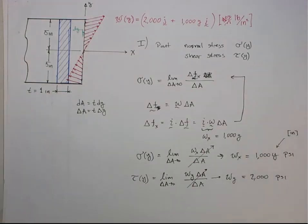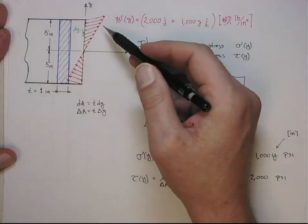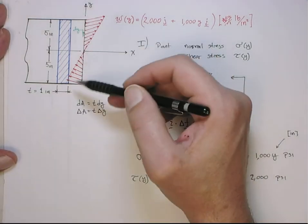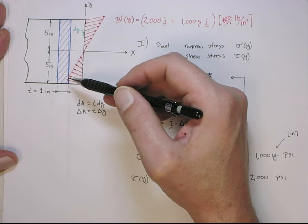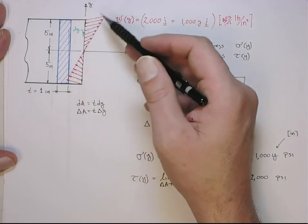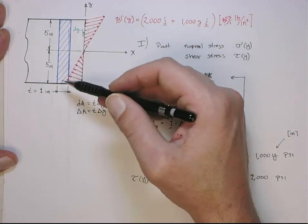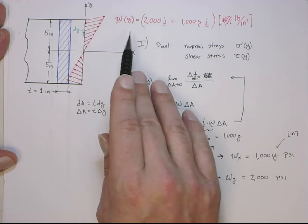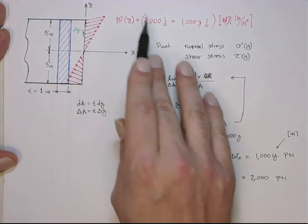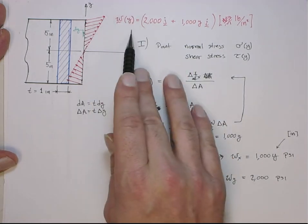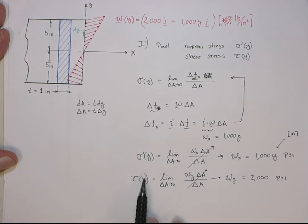Alright, so here's the third part, and I think this will be the final part of this problem where we have the experimentally determined distribution of traction along this cut face, this traction vector w, which is a function of y. We first showed that the x and y components correspond to the normal and shear tractions at a point.